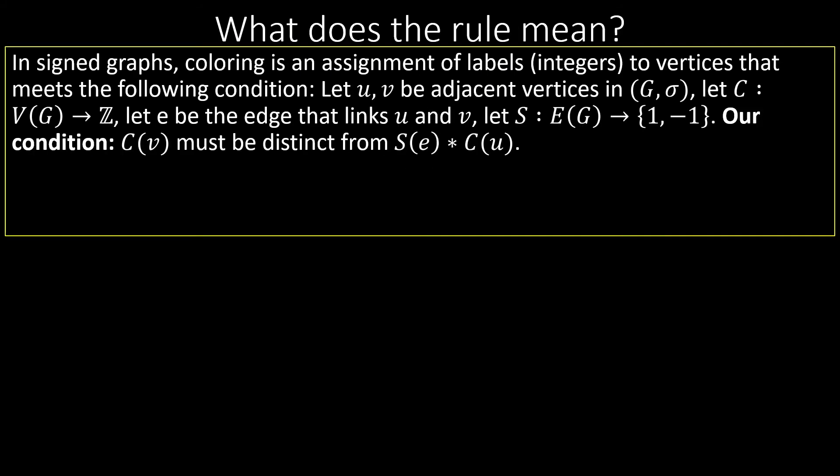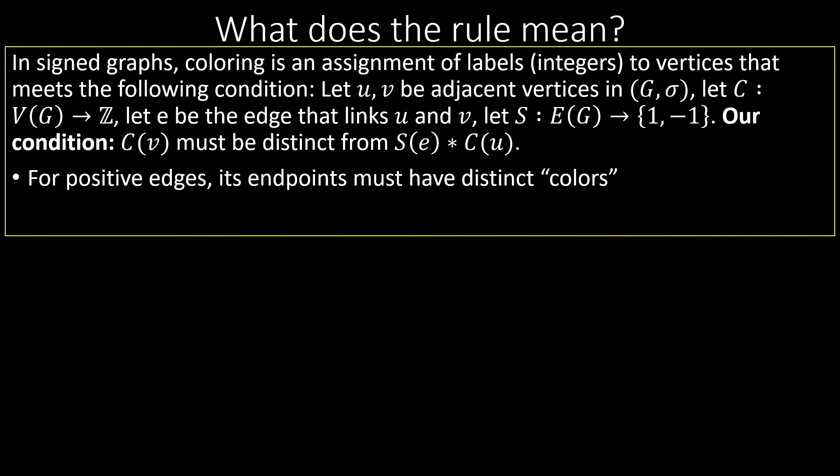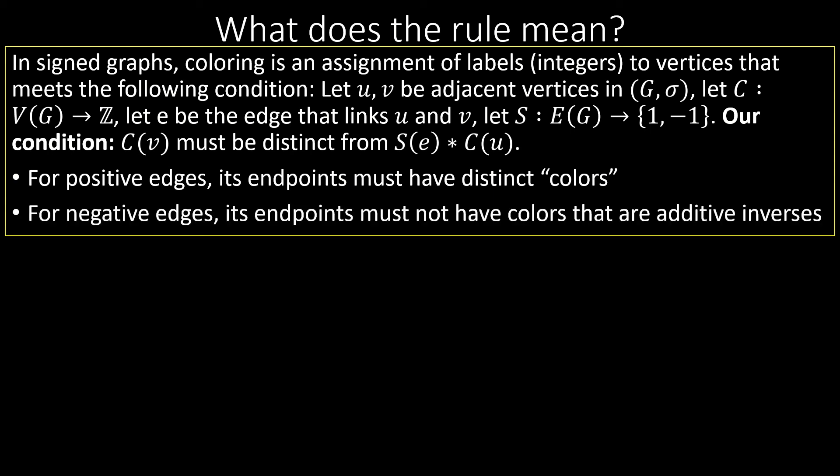Intuitively, this single rule really means two things. If the edge linking adjacent vertices is positive, those vertices must be labeled with distinct integers. While if the edge linking adjacent vertices is negative, those vertices must be labeled with integers that are not additive inverses of each other.